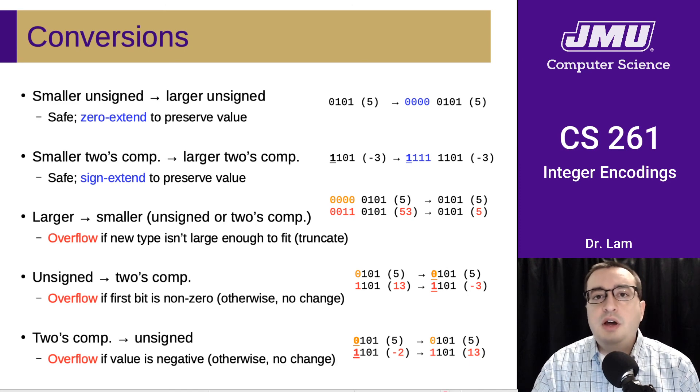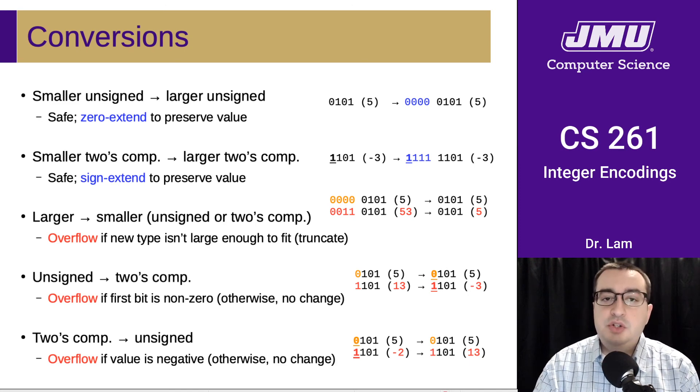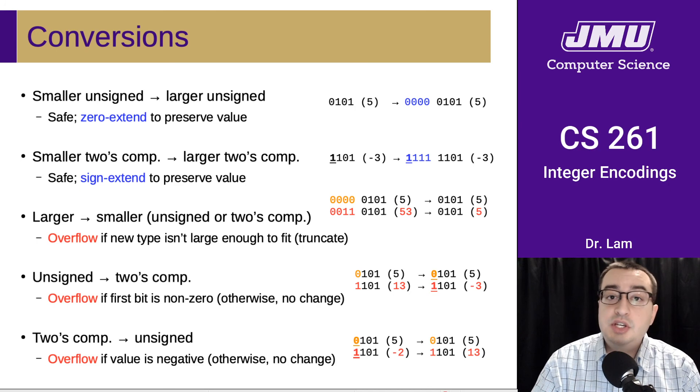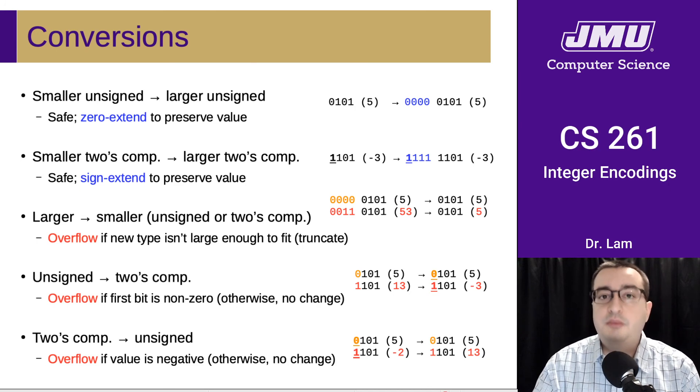So these are important things to keep in mind as you're working in low-level encodings and as you're writing programs in C, because you will occasionally need to convert numbers between different formats. And it's important to think about when you can do that safely and when you cannot.